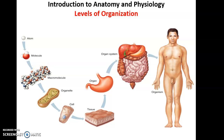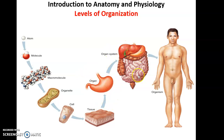Many macromolecules can form a structure called an organelle — tiny functional structures found within cells. The cell is of course the fundamental unit of life. When you get a bunch of similar cells working together, that gives you a tissue. Two or more tissues working together give you an organ, and a series of organs, glands, and so forth working together gives you an organ system or body system. All the organ systems together make up the organism itself.